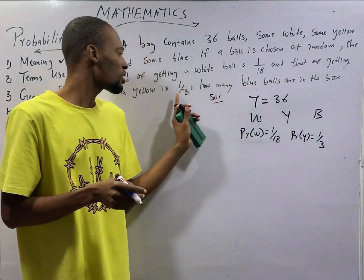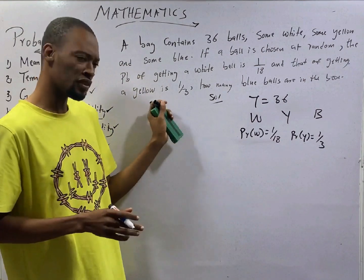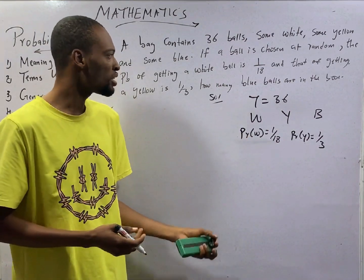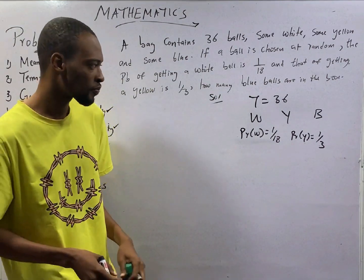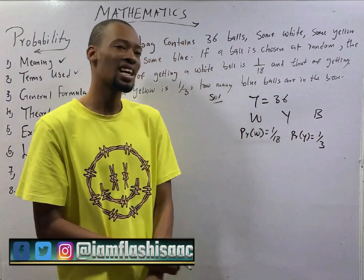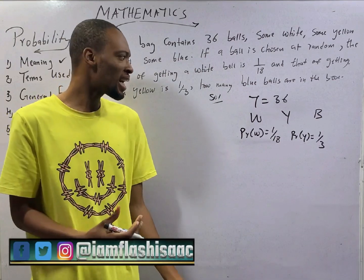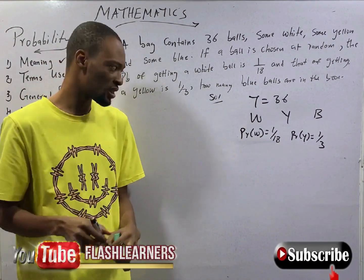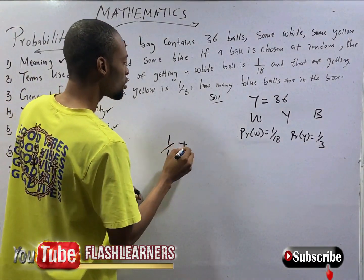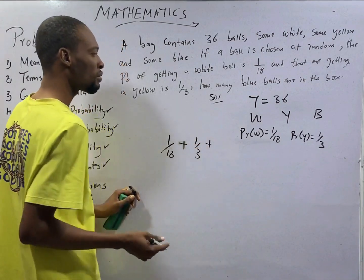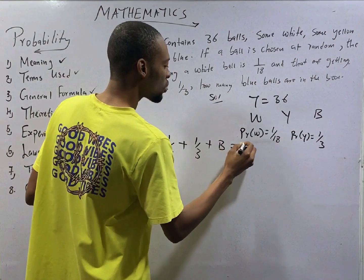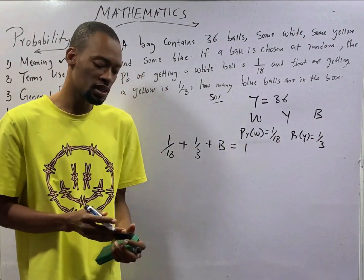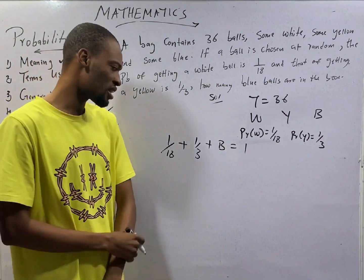Take note. These values are not the number of white balls or the number of yellow balls. They are probability, the chance, the possibility of getting these ones. But the question is saying how many blue balls are in the bag? They did not say we should find the probability of blue balls. They said how many blue balls. If they had said probability of blue balls, it would be easy for us because the total probability is 1. Probability cannot exceed 1. That would have been probability of white, 1 over 18, plus probability of yellow, 1 over 3, plus probability of blue. Everything here equals 1. So if you make blue or B subject of formula, every answer you will get is going to be probability of blue ball. We can actually solve the equation that way. Yes, let's do it that way.